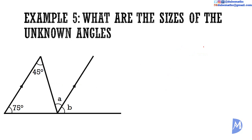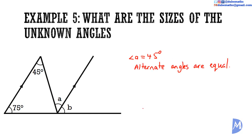Example 5: what are the sizes of the unknown angles? We have two parallel lines cut by two transversals. Considering the two parallel lines cut by one transversal, angle A and the 45 degree angle are alternate angles. Since alternate angles are equal, angle A equals 45 degrees. For angle B, considering the parallel lines and the other transversal, angle B and the 75 degree angle are corresponding angles. Since corresponding angles are equal, angle B equals 75 degrees.